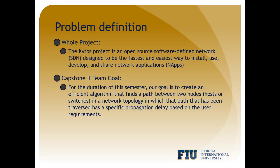Currently, there are two algorithms that exist: the shortest best path, which the Spring 2020 senior project team developed, and the already existing best constraint paths. Our goal is to create an exact path algorithm. The exact path algorithm is going to traverse a network topology between the starting node and the targeting node, or between one interface to another interface. A user specifies a propagation delay in which the path traversed between the starting interface and the targeting interface has that specific propagation delay.